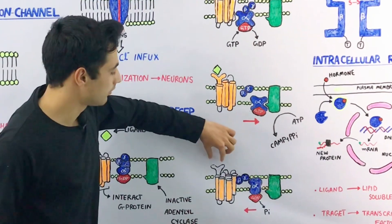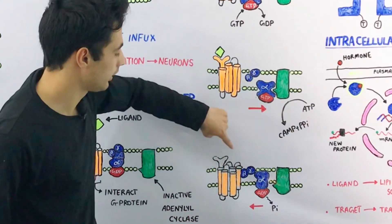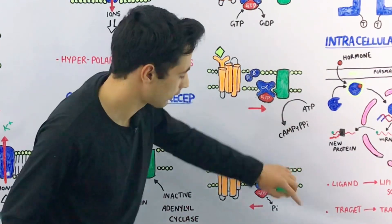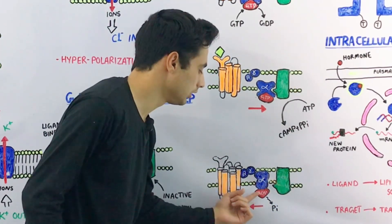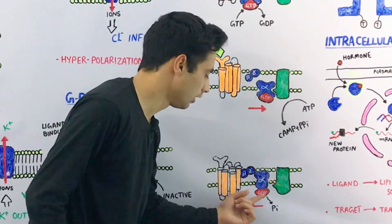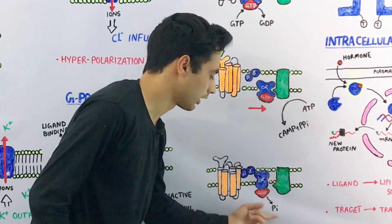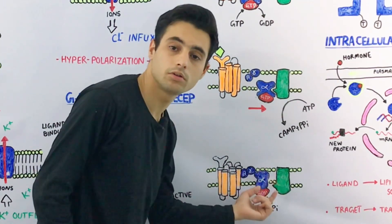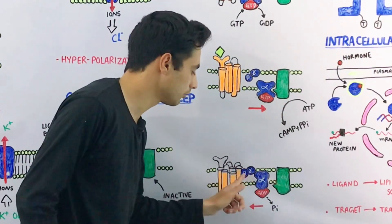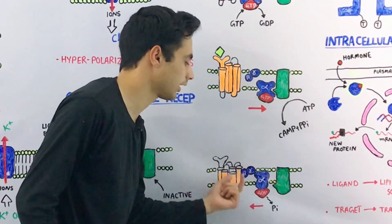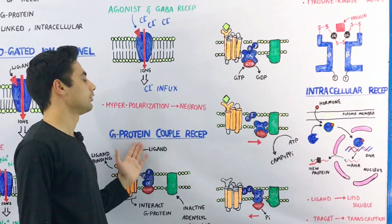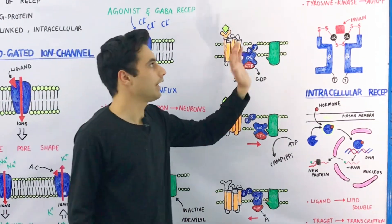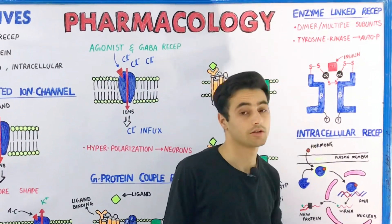When the ligand detaches from the ligand binding site of the coupled receptor, adenylyl cyclase is deactivated. The alpha subunit releases one inorganic phosphate, converting GTP back into GDP. The whole complex moves back towards the gamma and beta subunit and re-attaches with it. This is how the G-protein coupled receptors perform their action.